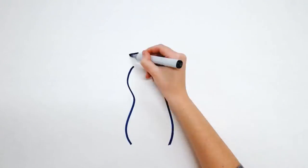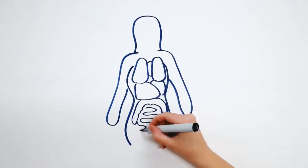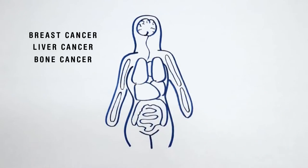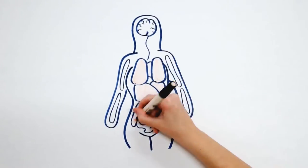You've probably heard people say that they had a loved one with four different kinds of cancer. Breast cancer, liver cancer, bone cancer, and brain cancer. Can that be right?